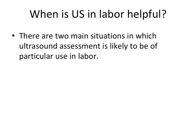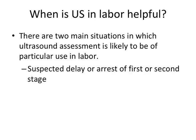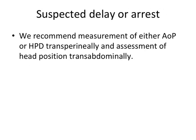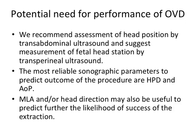When is ultrasound in labor helpful? There are two main situations in which ultrasound assessment is likely to be of particular use: if there is suspected delay or arrest of first or second stage, or when there is the potential need to perform an operative vaginal maneuver. We recommend measurement of either angle of progression or head perineum distance transperineally, and assessment of head position transabdominally in suspected delay or arrest. If operative vaginal delivery is required, we recommend assessment of head position by transabdominal ultrasound and suggest measuring fetal head station by transperineal ultrasound. The most reliable sonographic parameters to predict outcome are head perineum distance and angle of progression. Midline angle and/or head direction may also be useful to predict further the likelihood of success of the extraction.